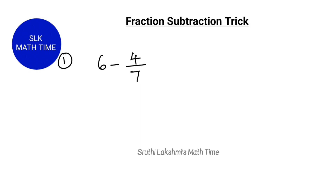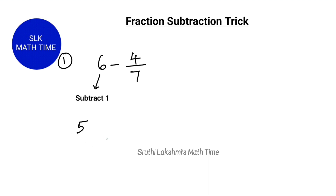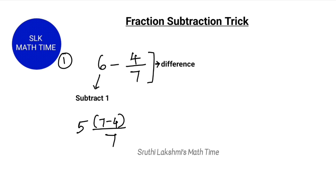The first example is 6 minus 4 by 7. So we have to subtract 1 from the whole number 6. 6 minus 1 is 5, so we write down 5. Next, we are going to find the difference between the denominator and the numerator. So 7 minus 4 is 3. Next, we write the denominator as it is. So the answer is 5 and 3 sevenths.